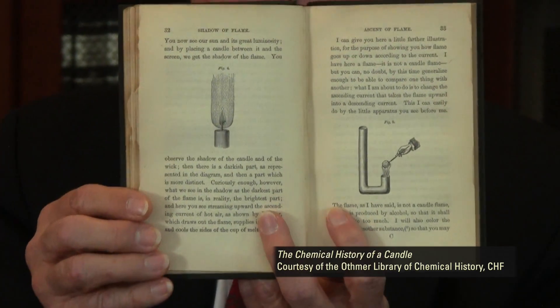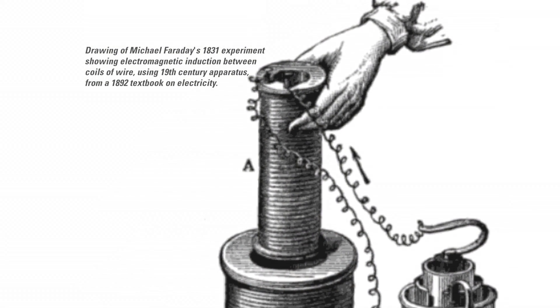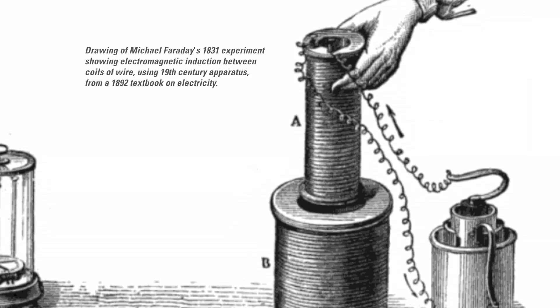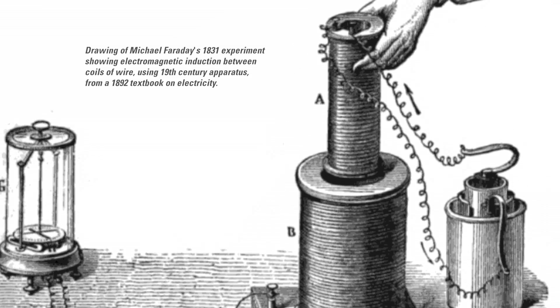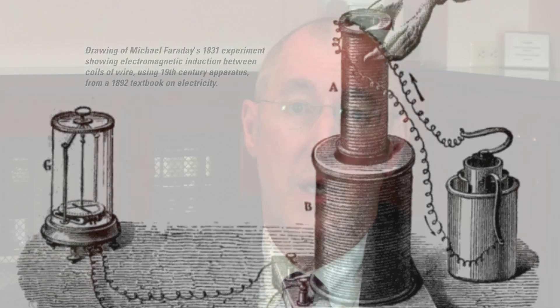Faraday was a master of demonstrating actual things. Among his other achievements, he's the person who discovered electromagnetic induction, the basis of all the power generation that we use today. He's the father of electrochemistry. He discovered how molecules and elements change under an electric field. The fact that we have metals like aluminum is due to Faraday's discovery that they could be produced by electricity under the right circumstances.